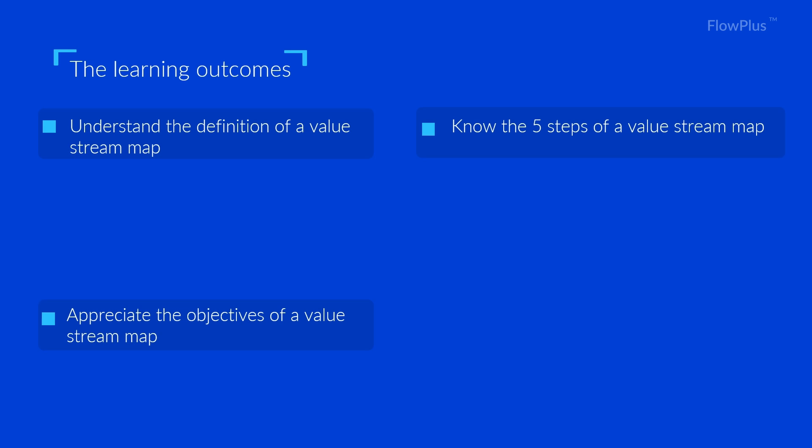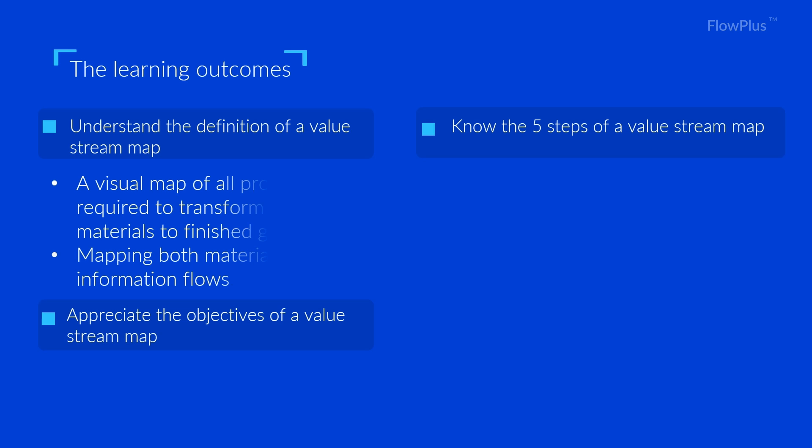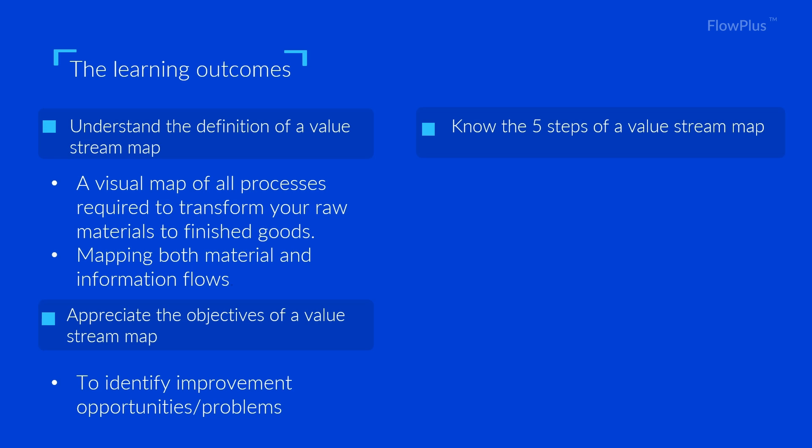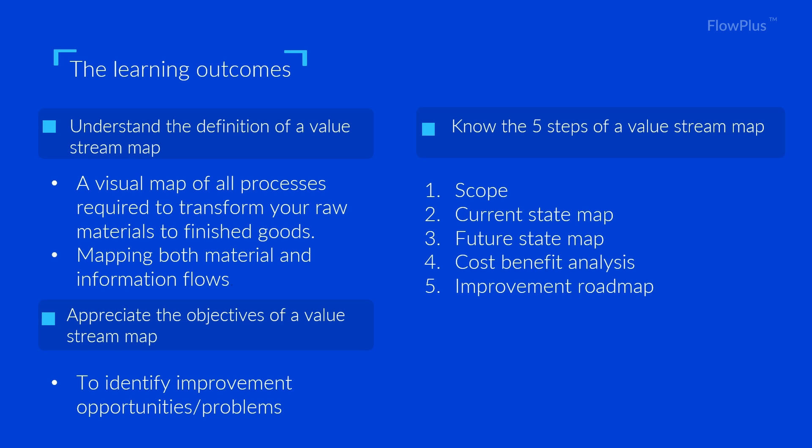Let's summarise what we have learnt. We know that a value stream map is a visual map of all processes required to transform raw materials into finished goods, mapping both material and information flows. We know the main objective is to identify improvement opportunities, and we now know that the five steps are: the scope, the current state map, the future state map, cost benefit analysis, and finally the improvement roadmap.